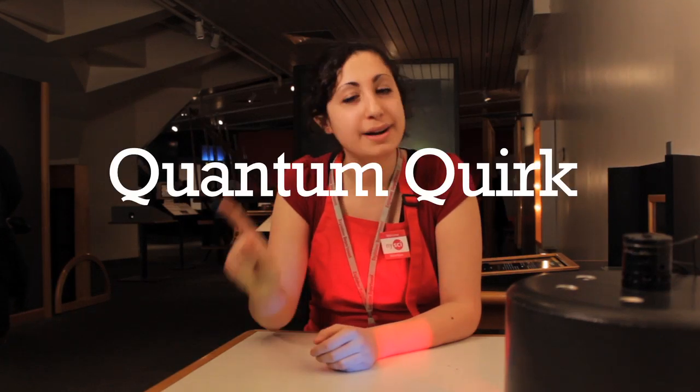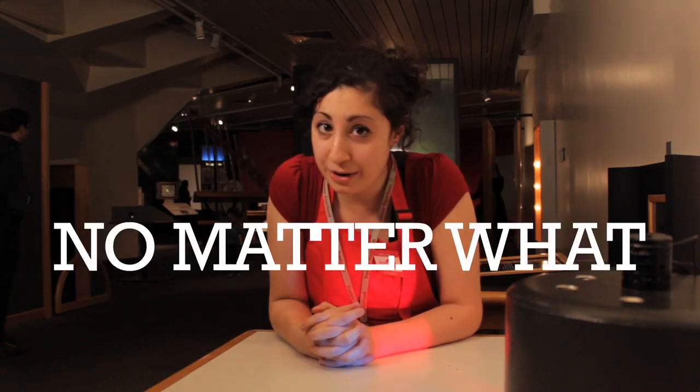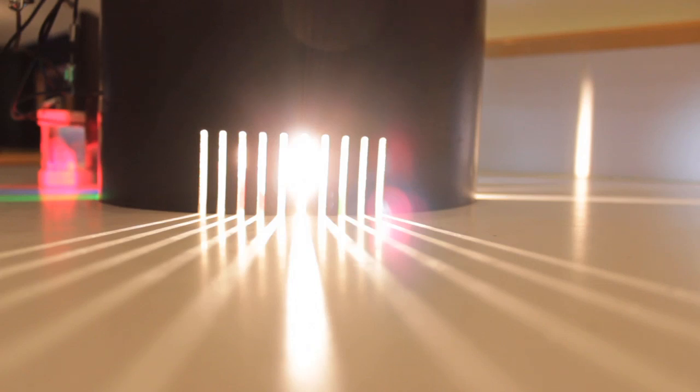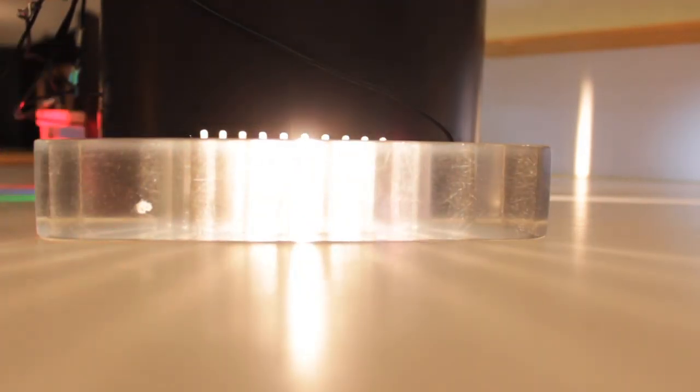This brings us to quantum quirk number one: light travels at a constant speed of three times ten to the eight meters per second, no matter what. Of course, there does come some fine print with such bold words. For example, take a look at this light traveling through the air and compare it to this other light traveling through the lens.